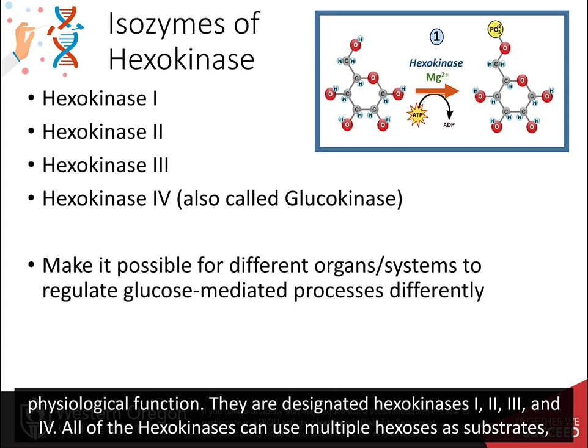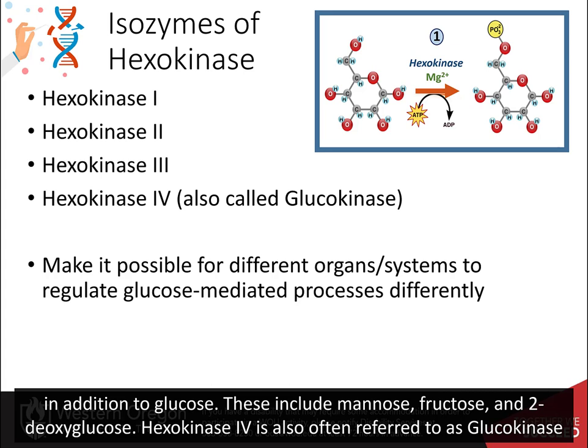They are designated hexokinases 1, 2, 3, and 4. All of the hexokinases can use multiple hexoses as substrates in addition to glucose. These include mannose, fructose, and 2-deoxyglucose.